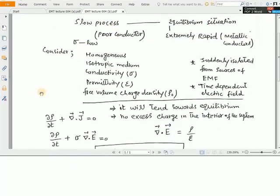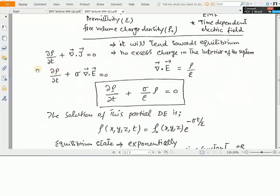Let us consider a homogeneous isotropic medium of conductivity sigma and permittivity epsilon and free volume charge density rho naught. If we disturb that medium or system by suddenly isolating this system from the sources of EMF or time-dependent electric field, then what will happen? That system will tend towards its equilibrium condition, means no excess charge in the interior of the system but charge comes on the surface of the medium.